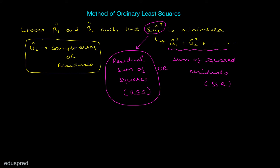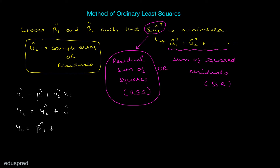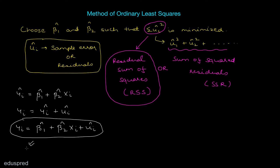To figure out the formulas for beta1 hat and beta2 hat, we have to do a minimization exercise which is going to involve math. The first thing we should do is write a mathematical expression for summation of ui hat squared. We have three sample regression equations. The third one is yi = beta1 hat + beta2 hat * xi + ui hat, and we focus on this one because we need an expression for ui hat. From this equation, ui hat = yi − beta1 hat − beta2 hat * xi.